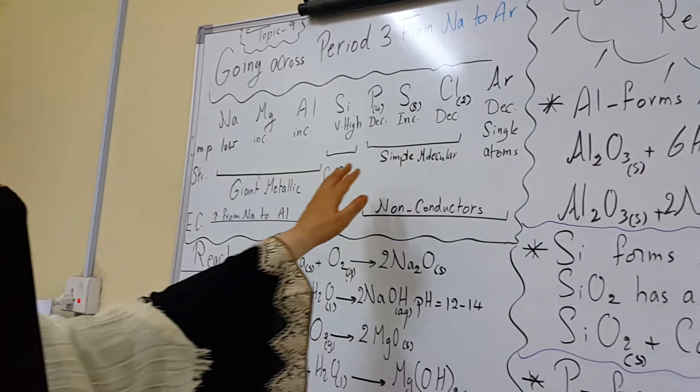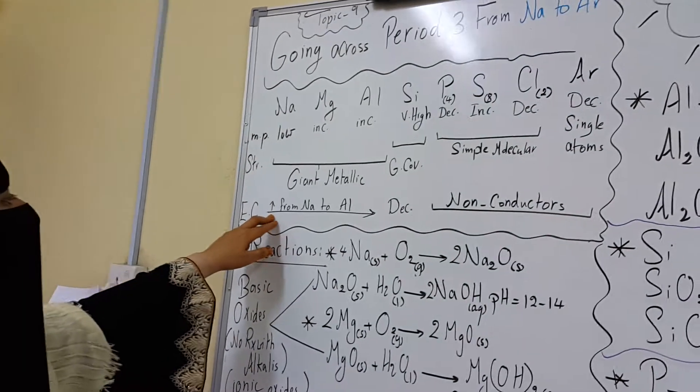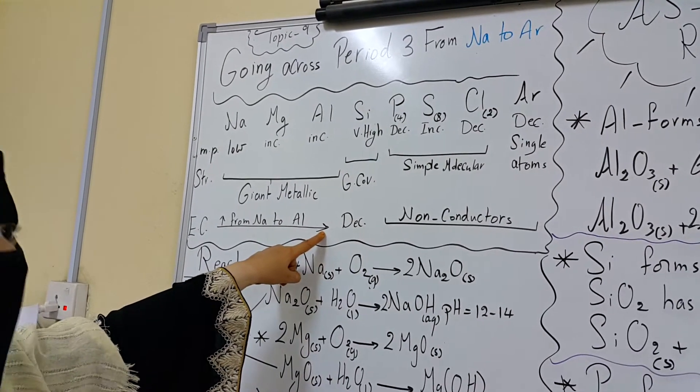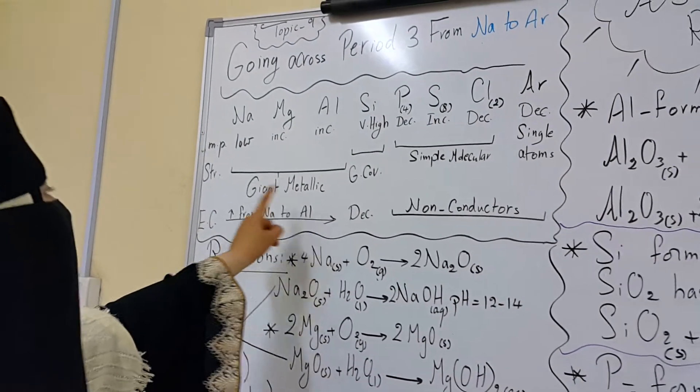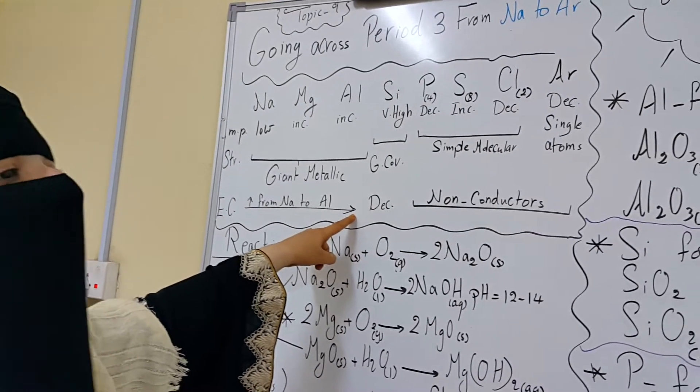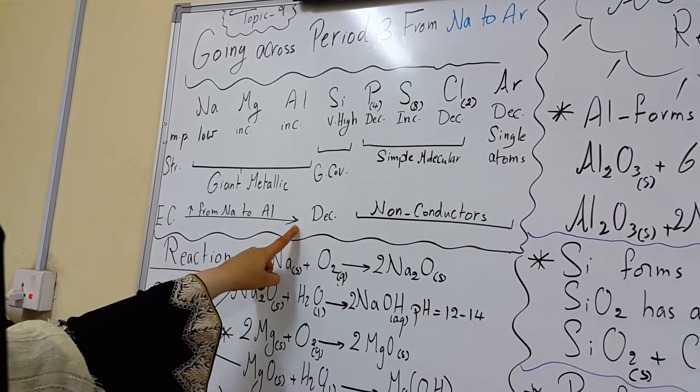In this case we find melting point decreasing so much. Now in case of electric conductivity from sodium to aluminum, it increases gradually and it's maximum in aluminum. Why is that? As we go from sodium to aluminum, valence electrons increase. The free electrons in the metallic lattice also increase and this increases electric conductivity.